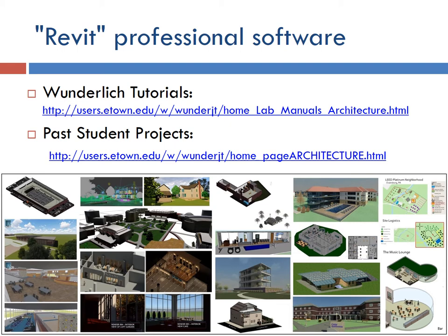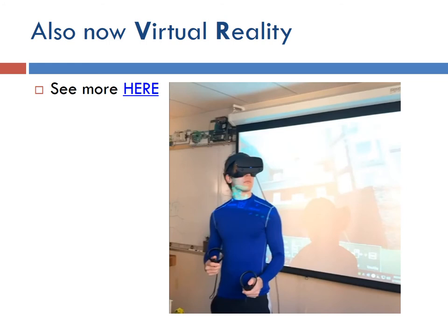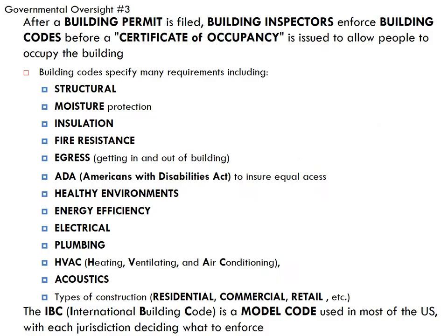I have some basic tutorials on Revit and many student projects going back almost 15 years. We can also animate the 3D models using 3D Studio Max and Lumion. Virtual reality is now a powerful tool in architecture — you put your 3D models in and people can experience a much more real walkthrough. But back to governmental oversight: you have building inspectors and permits. This is different from zoning and planning commissions — this is code enforcement for safety details: structure, moisture, insulation, fire resistance, egress, and all these things.